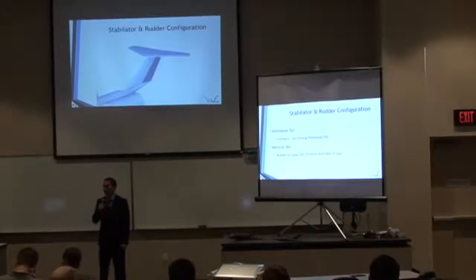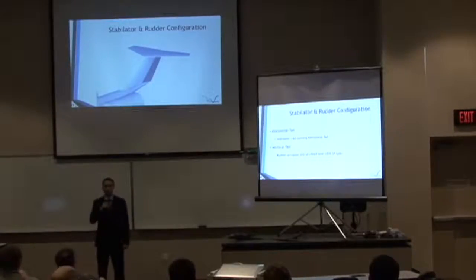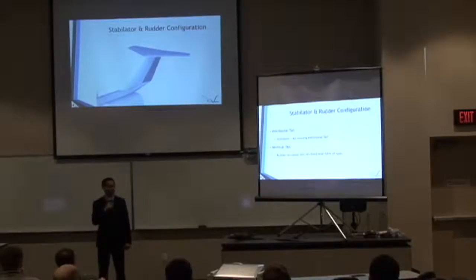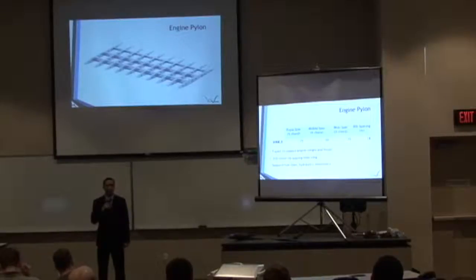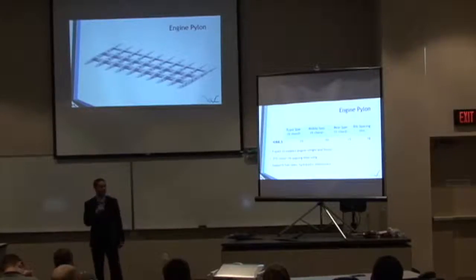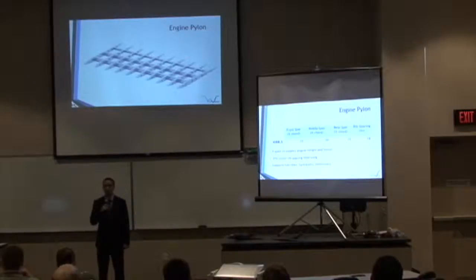Shown on the primary screen is the vertical tail including the rudder, and an all-moving horizontal tail called a stabilator, while the vertical tail rudder occupies some portion of the chord and 100% of the span. Next shown is the structure of the engine pylon, designed with three spars at 25%, 50%, and 70% chord, with rib spacings of 18 inches. This supports the engine weight, thrust, fuel lines, hydraulics, and electronics.